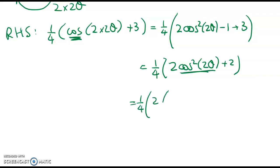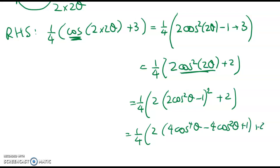So I've got 1 quarter times 2 of 2 cos squared of theta minus 1 squared plus 2. And when I expand that, I'm going to have 4 cos to the power of 4 theta minus 4 cos squared theta plus 1 plus 2.